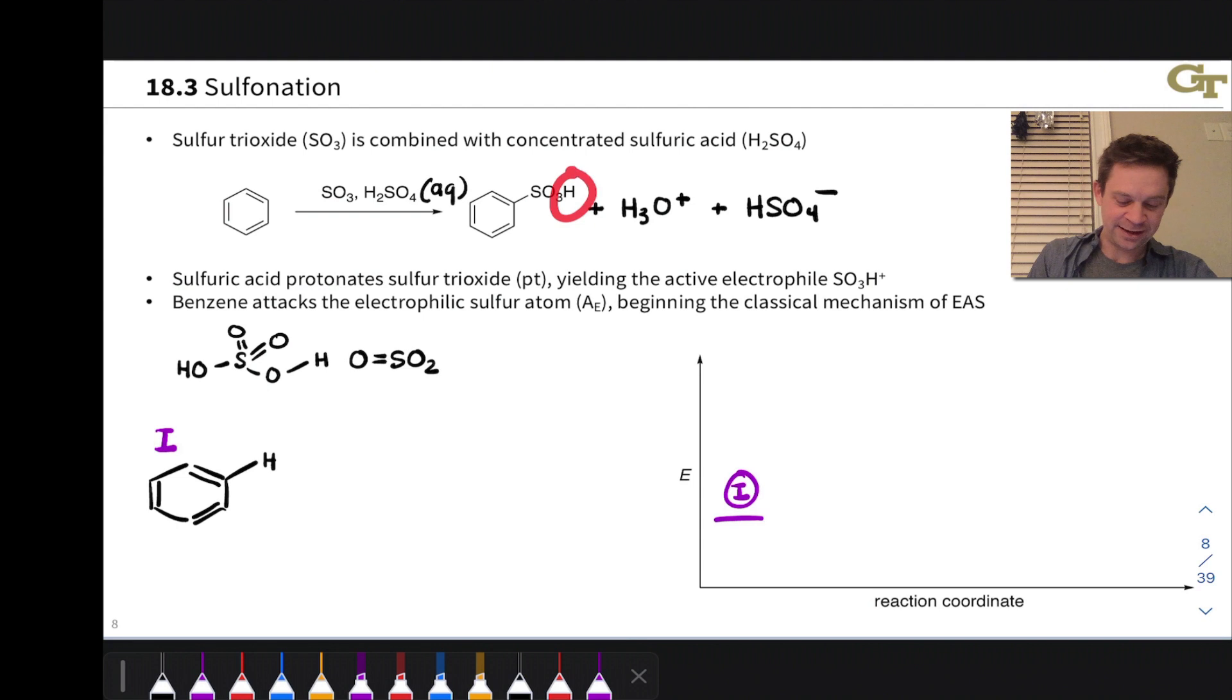The H in SO3H comes from a proton transfer from sulfuric acid, so we'll have the bisulfate anion there as a byproduct as well. All right, so how does this mechanism work? How do we get the active electrophile? What is the structure of the active electrophile in this reaction?